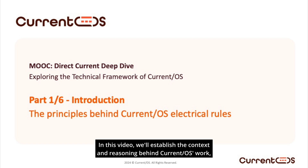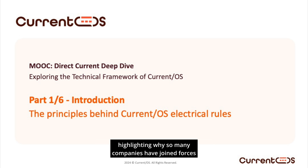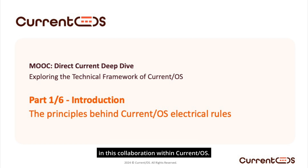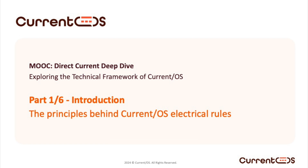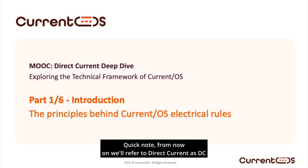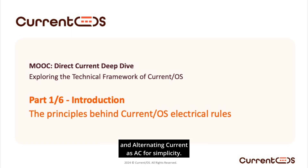In this video, we'll establish the context and reasoning behind Current OS's work, explain the underlying principles that drive Current OS's technical choices, highlighting why so many companies have joined forces in this collaboration within Current OS. Quick note: from now on we'll refer to Direct Current as DC and Alternating Current as AC for simplicity.